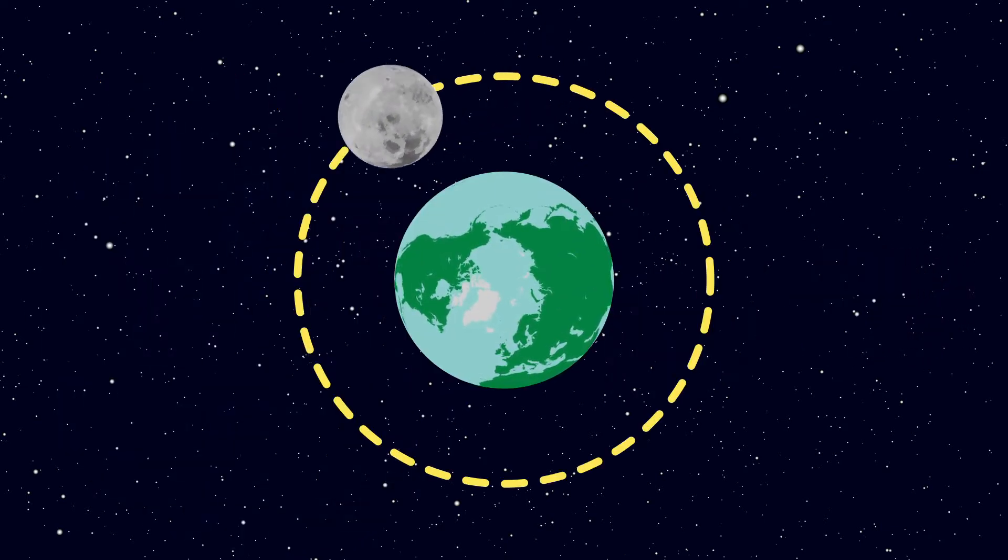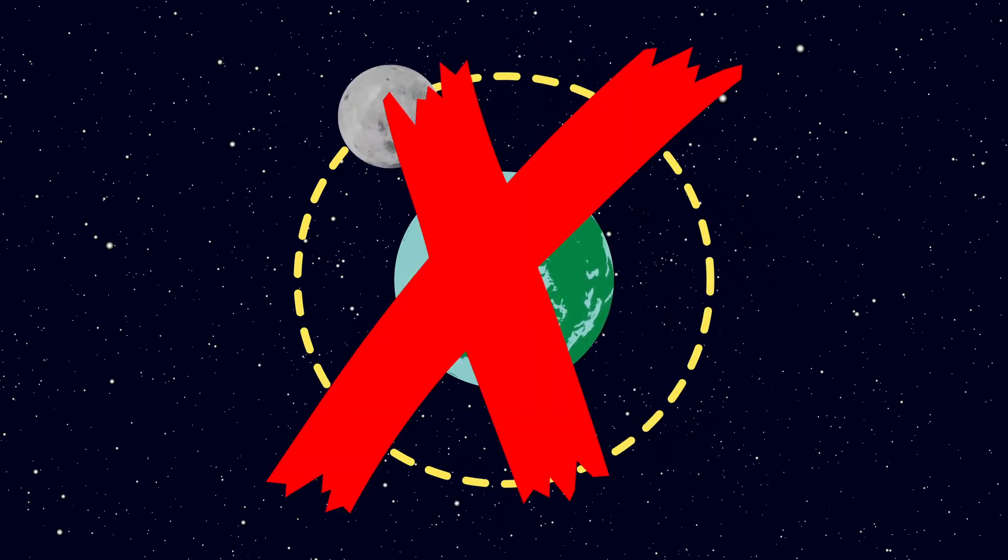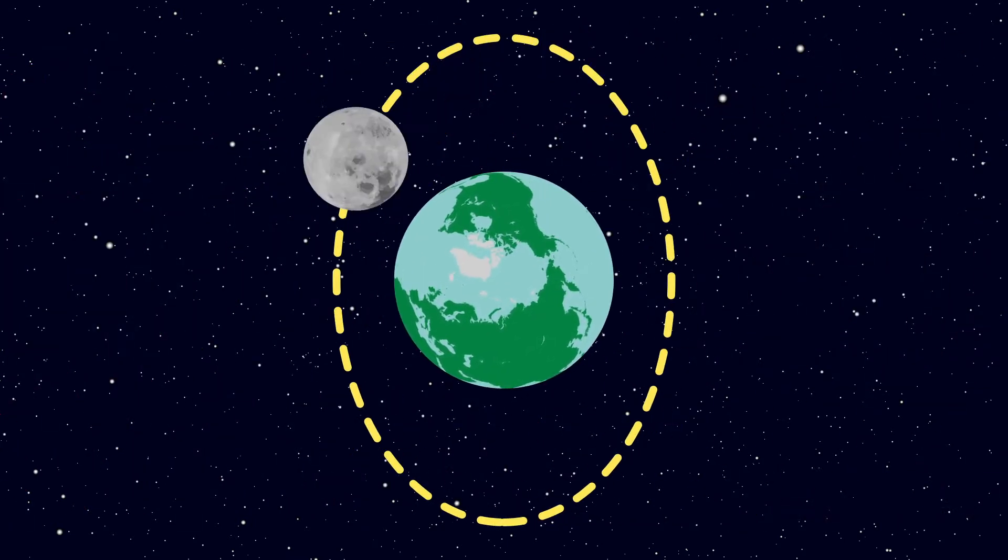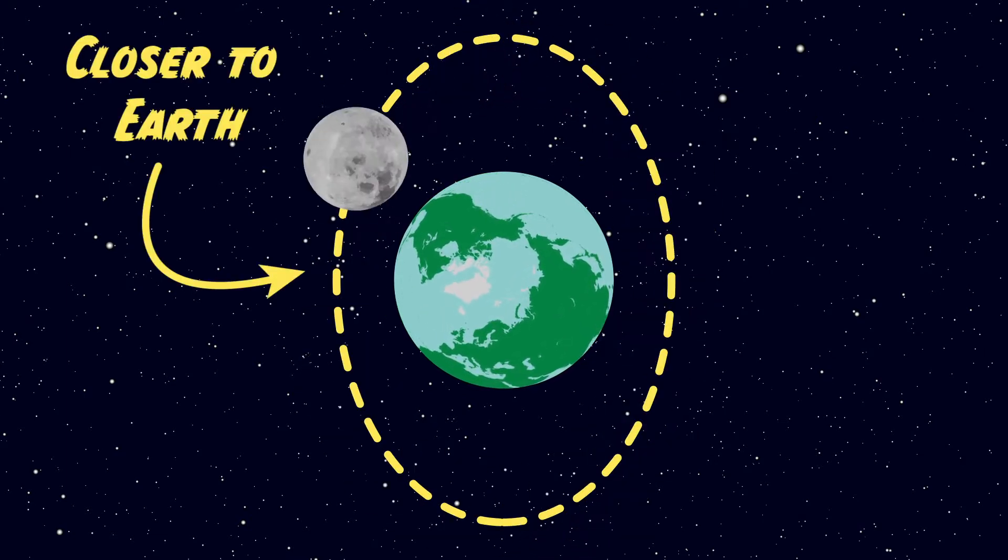This happens because the moon doesn't orbit around the earth in a perfect circle like it's often presented. The moon's orbit around the earth is actually an ellipse, which means that sometimes it's closer to the earth and sometimes it's further away.